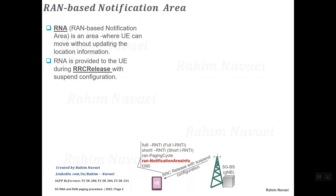In the RRC inactive state, all radio connections — the data radio bearers and signaling radio bearers except SRB0 — are released and suspended. However, the N2 and N3 connections are maintained between the last serving gNB and the 5G core, meaning AMF and the user plane function. So from the 5G core point of view, the UE is CM connected.